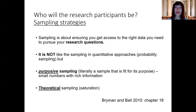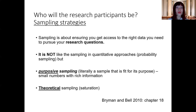Compared with quantitative methodology, which usually follows probability sampling — and you will learn that in the quantitative lectures later in this module — for qualitative sampling strategy, we could categorize them into two types: one is called purposive sampling and the other is called theoretical sampling.